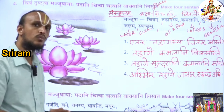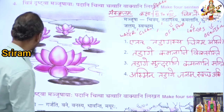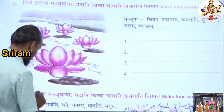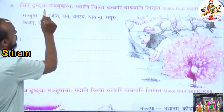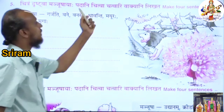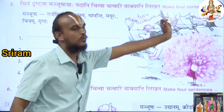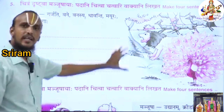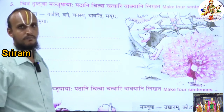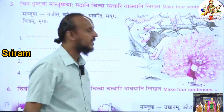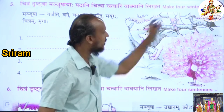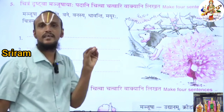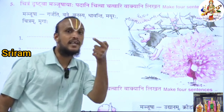Now I will give you one homework. What you have to do: 'Chitram drishtva, padani chitva, chatwari vakiani nikata' — make four sentences. See the picture. It is a picture of a forest. A lion is there. So many deers are running. A peacock is dancing. You can easily analyze three sentences in English first.